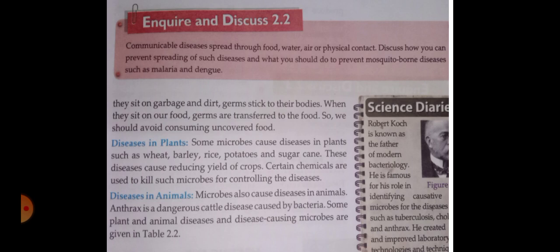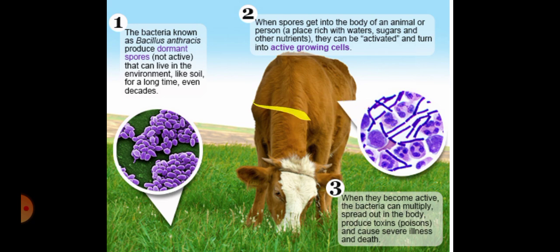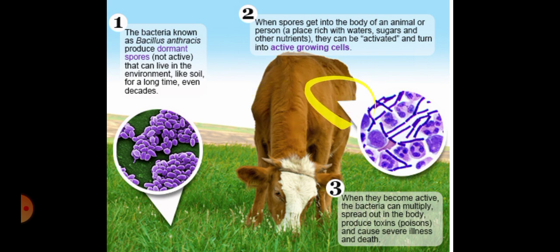Diseases in animals: microbes also cause diseases in animals. Anthrax is a dangerous cattle disease. The anthrax microorganism can enter through the skin, and affect the lungs, stomach, or skin. Anthrax is very dangerous.